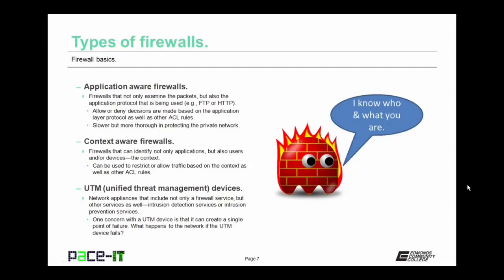There are also context-aware firewalls. These are firewalls that can identify not only applications, but also users and devices — the context of the traffic. Context-aware firewalls can restrict or allow traffic based on that context as well as other ACL rules. Then there are unified threat management devices, or UTM devices. These are network appliances that include not only a firewall service, but other services as well — usually intrusion detection or intrusion prevention services. One concern with a UTM device is that it can create a single point of failure in the network: if that UTM device fails, is your security gone or does the network go down?